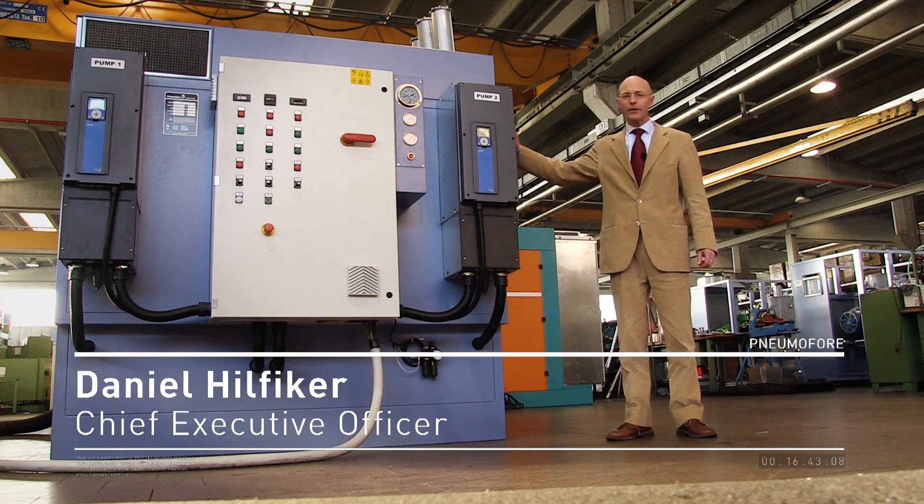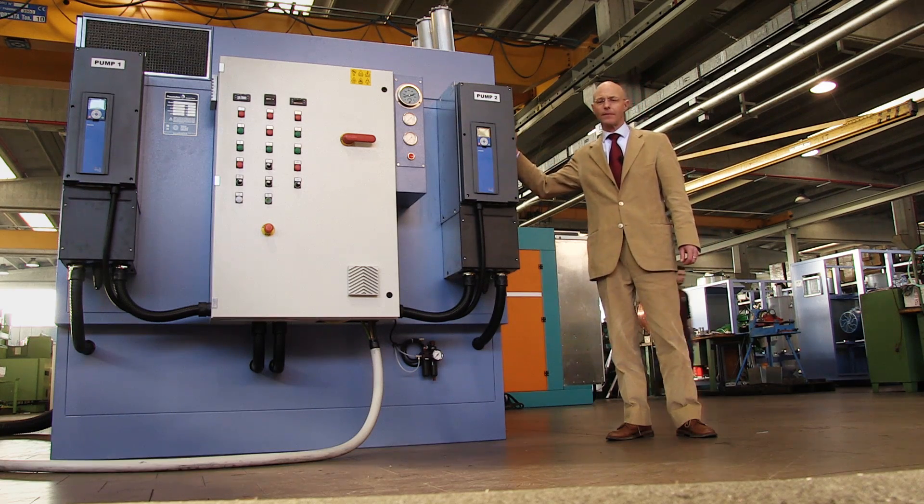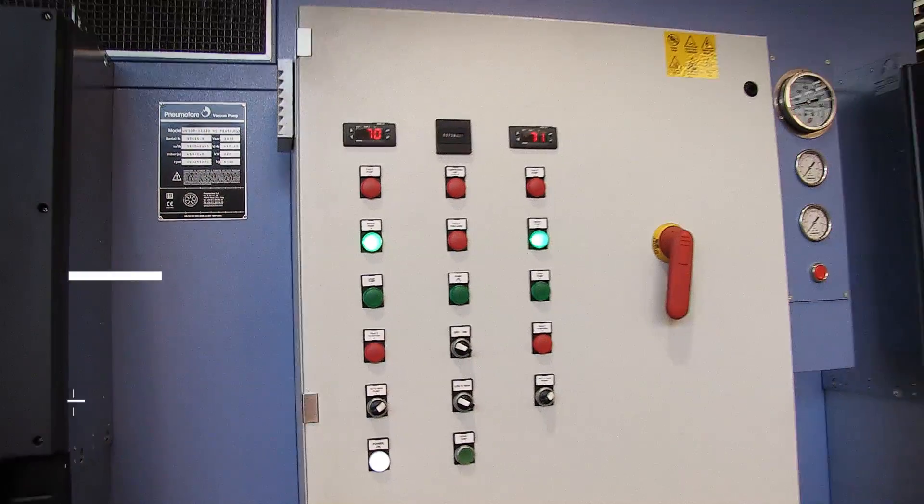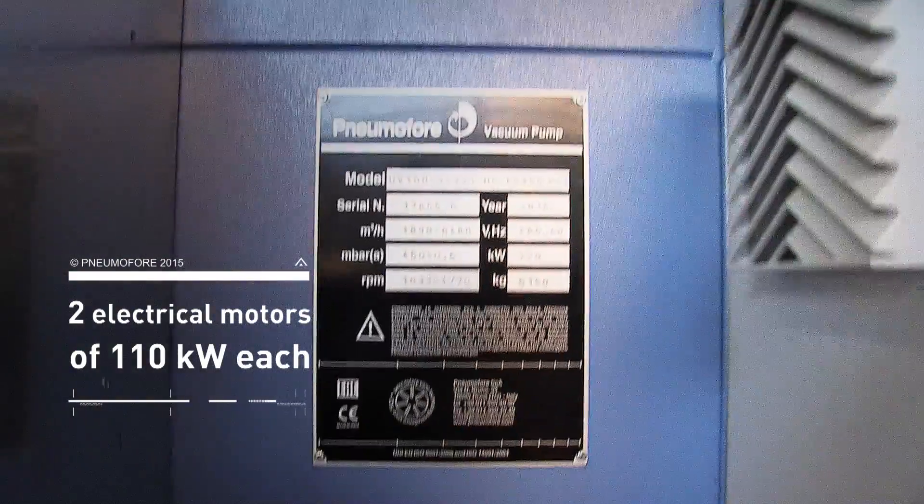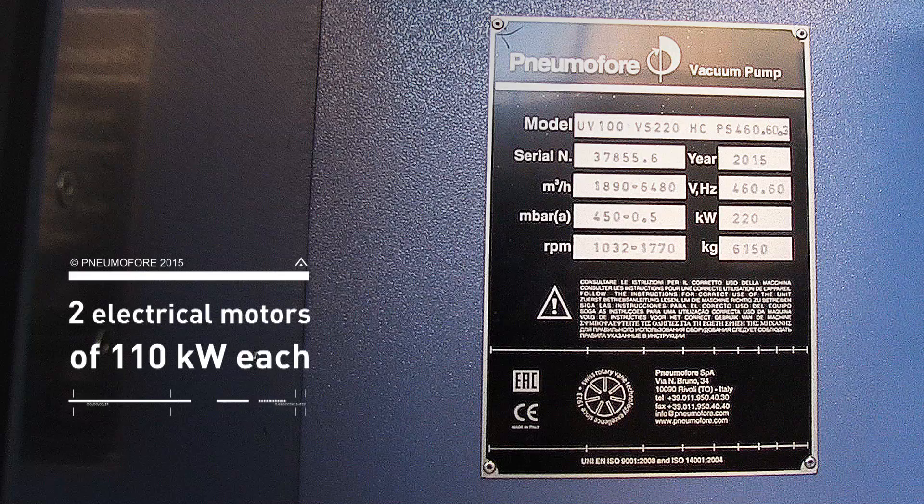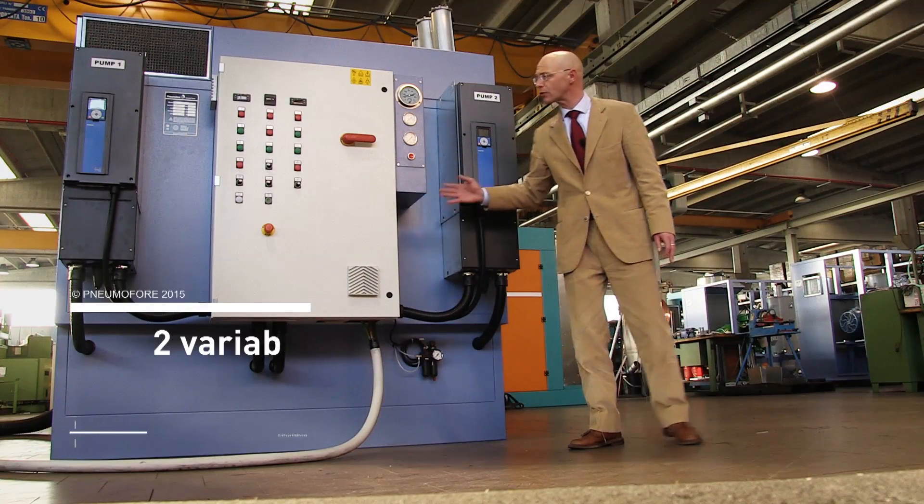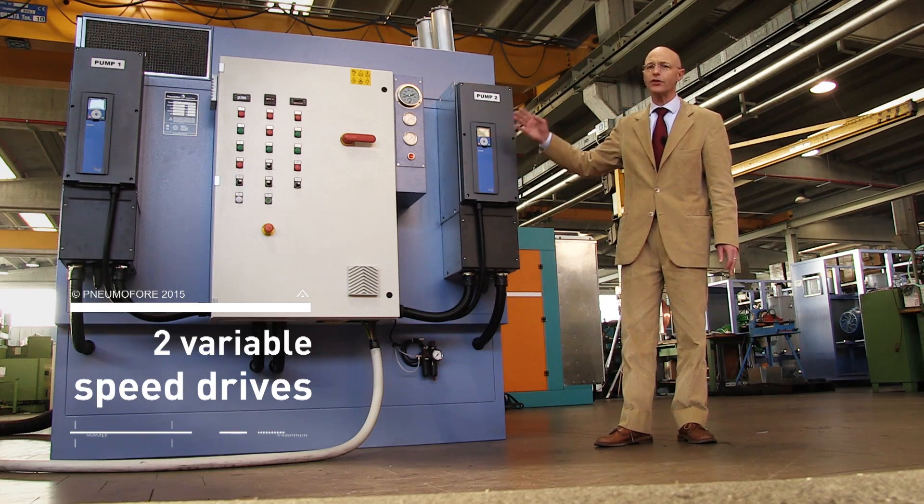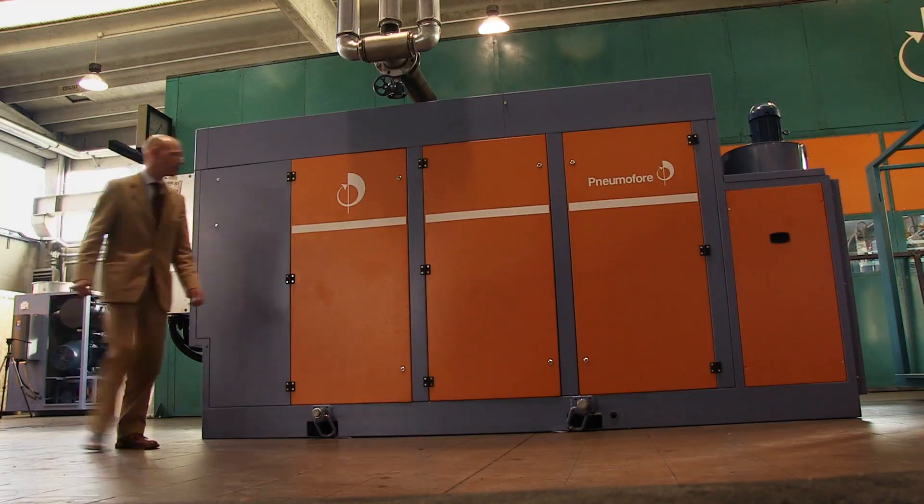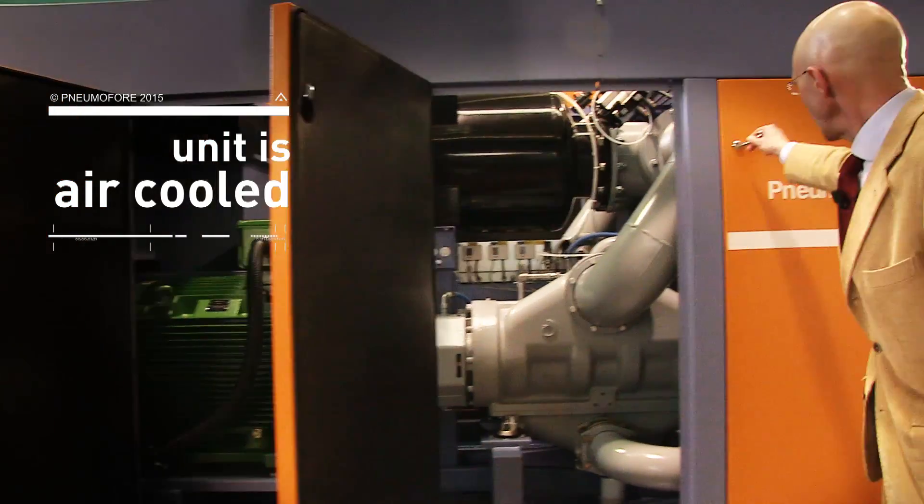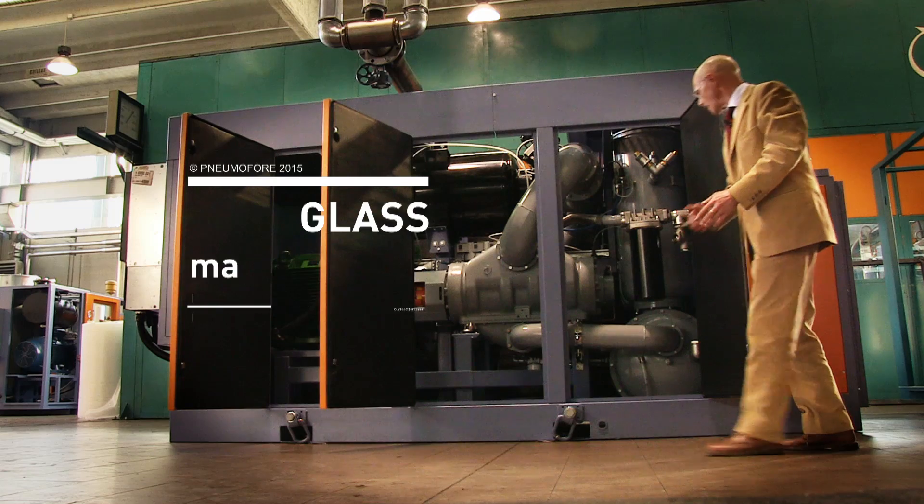This is the UV100 vacuum pump. It's a machine with two air ends, two electrical motors of 110 kilowatt each. We see here the central control panel and two variable speed drives to control singularly each of the electrical motors. The unit is air-cooled, lubricated, and this specific unit is dedicated to bottle glass manufacturing.